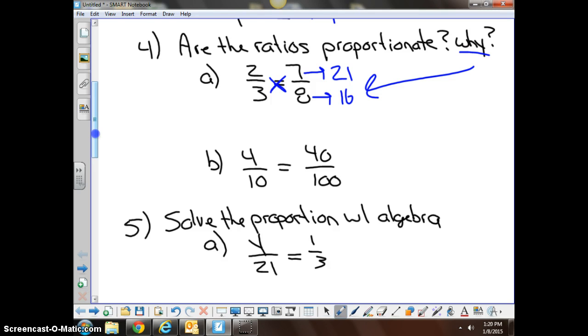B would be in a similar situation. You have four-tenths is equal to forty-hundredths by reducing. You know that both reduced down to one-fourth, but if you were going to prove using cross products, you could multiply four and a hundred and get four-hundred, and you would multiply ten and forty and get four-hundred. Because the cross products are equal, we know that we have equal ratios.